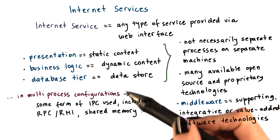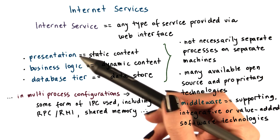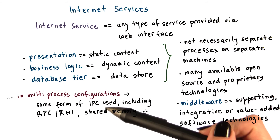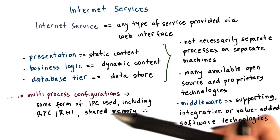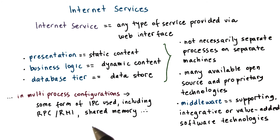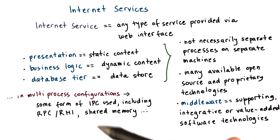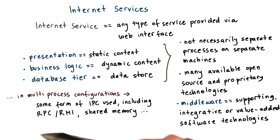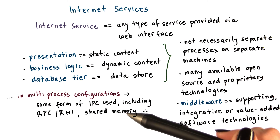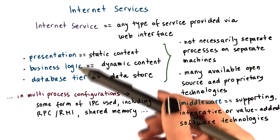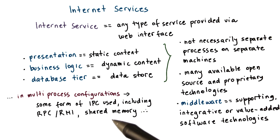One important point is that for services organized as multiple processes, the inter-process communication among those processes is carried out via some form of IPC, such as RPC or RMI for Java-based architectures, as well as some use of optimizations based on shared memory in case different processes are running on the same machine. These are examples of the inter-process communication mechanisms already discussed in this course, and they are relevant in the context of real-world deployment of internet services.